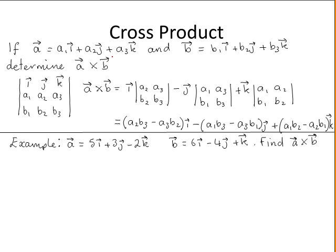Here the vector A and the vector B are given in terms of their i, j, and k components, and we are asked to determine the cross product of vector A with vector B.